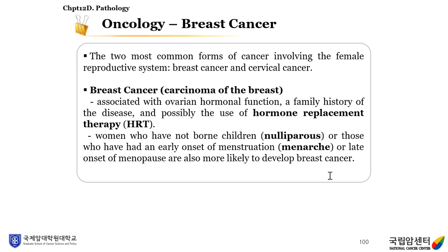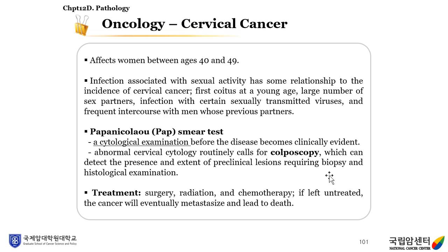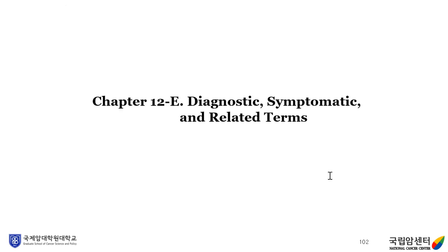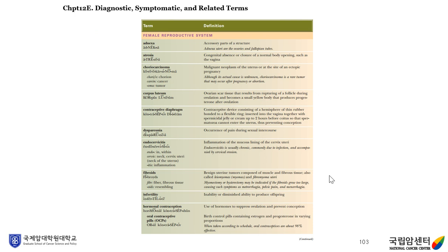Breast cancer: the two most common forms of cancer involving the female reproductive system are breast cancer and cervical cancer. Breast cancer is associated with ovarian hormonal function, a family history of the disease, and possibly the use of HRT (hormone replacement therapy). Cervical cancer affects women between ages 40 and 49. A Pap smear test can be used for early diagnosis of cervical cancer through cytological examination before the disease becomes clinically evident. The remaining diagnostic, symptomatic, and related terms will be covered in the next video.